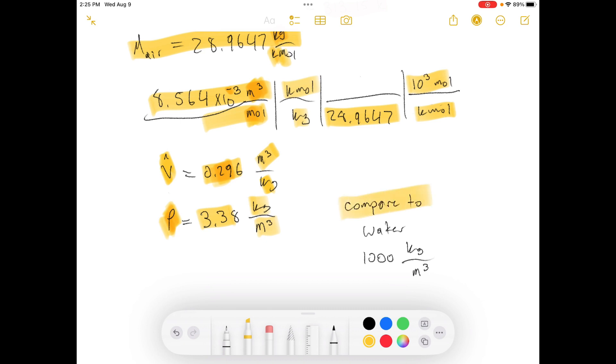We compare that to water. It should be about a thousand times different. And yeah, it's about a thousand times different. The air density is very low. Water density as a liquid is a lot heavier.